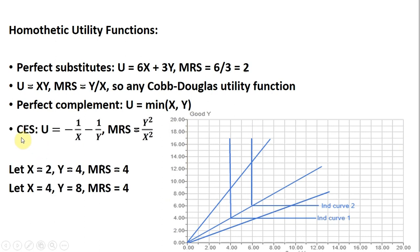We have a constant elasticity of substitution, or at least a special case of that — I discussed this utility function in another video — where the marginal rate of substitution is given by y squared divided by x squared. Once again, if we were to double an initial consumption bundle, the marginal rate of substitution would remain unchanged.